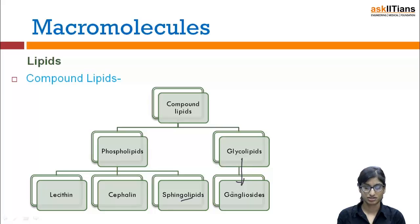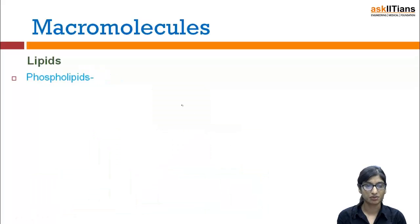Phospholipids, as I told you about the categorization, are made up of two fatty acids, glycerol, a phosphoric group, and a nitrogenous compound.